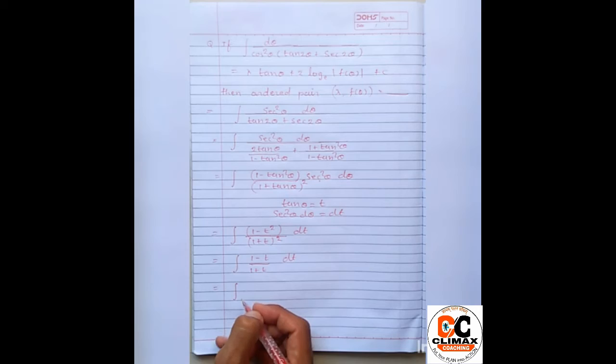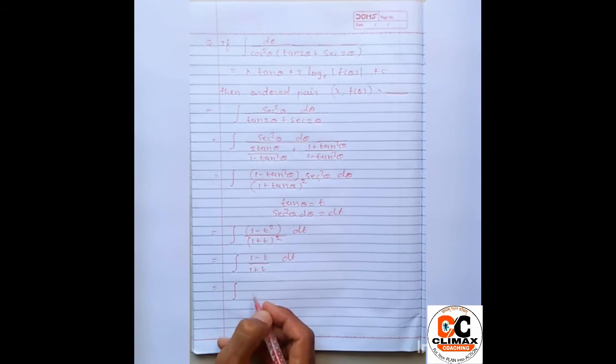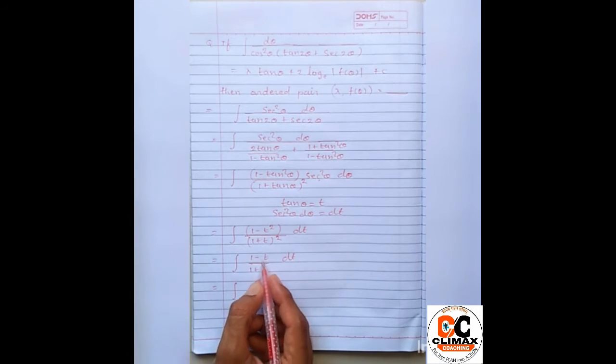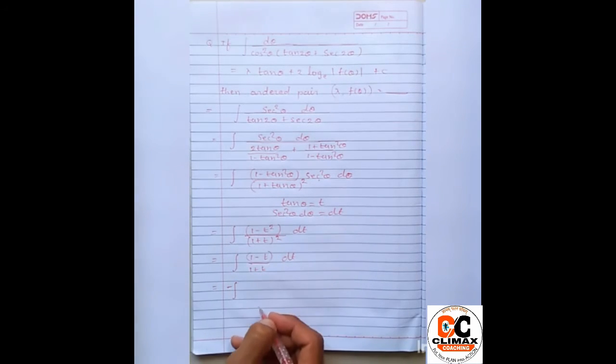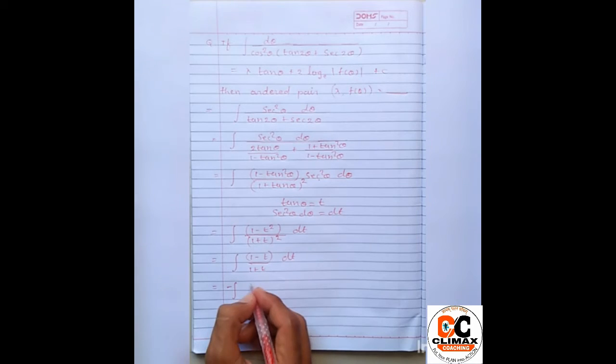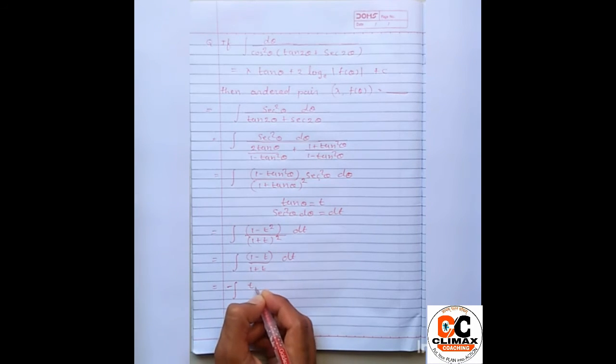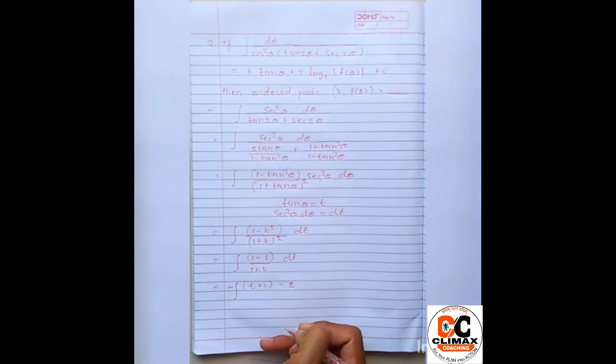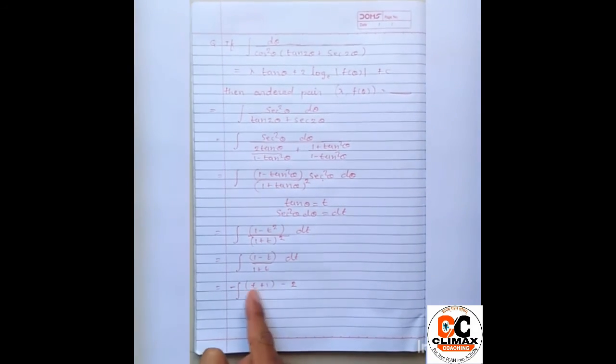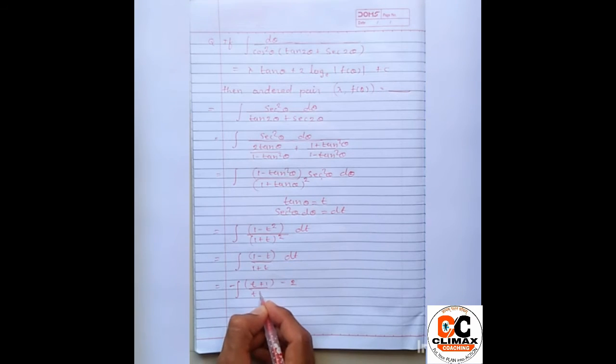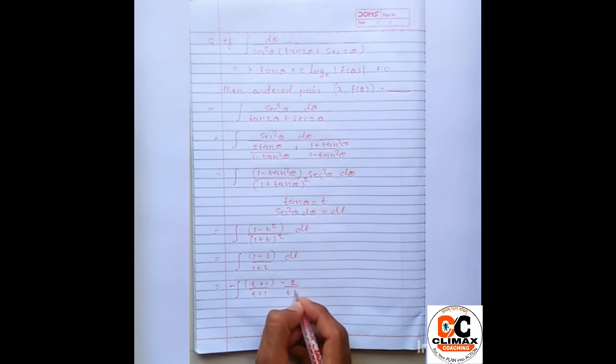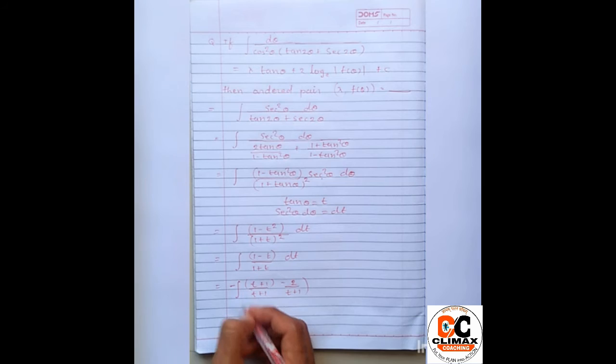To agar hum ismein minus common lete hain yah jo numerator hai wo 1 minus T hai wo ab T minus 1 ban gaya hai. Ab T minus 1 hai usmein T plus 1 karo to phir minus 2 mujhe karna padega kyonki T plus 1 minus 2 to ab finally wo T minus 1 ho chuka hai. Phir dono ko main T plus 1 agar separate de deta hun to yahan par mere paas banega